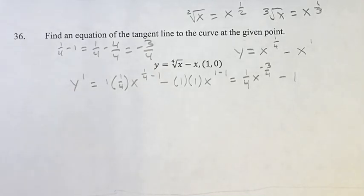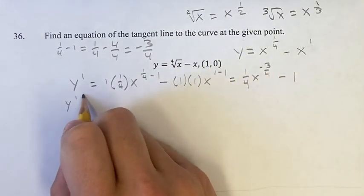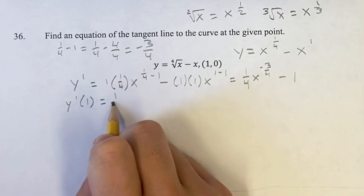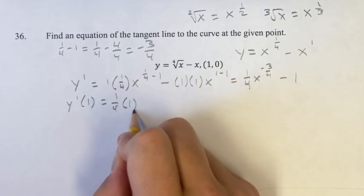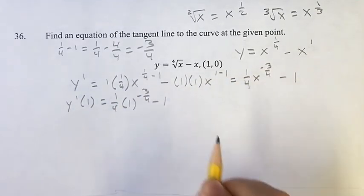Now, this is something where we can find the derivative at any point by just plugging in our value of x. In this case, the value of x is one. So, y prime of one is one-fourth times one to the negative three-fourths minus one.